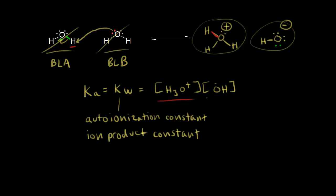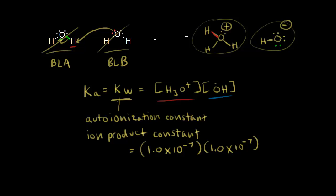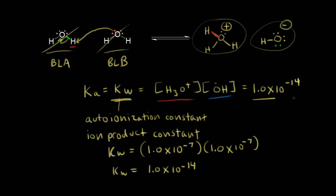The concentration of hydronium ions in pure water at 25°C has been determined experimentally to be 1.0×10⁻⁷ M. The concentration of hydroxide, also determined experimentally, is likewise 1.0×10⁻⁷ M. So we can calculate Kw: it equals 1.0×10⁻⁷ times 1.0×10⁻⁷, which is 1.0×10⁻¹⁴. With an equilibrium constant much less than 1, the equilibrium lies far to the left — that's why you have such low concentrations of ions.